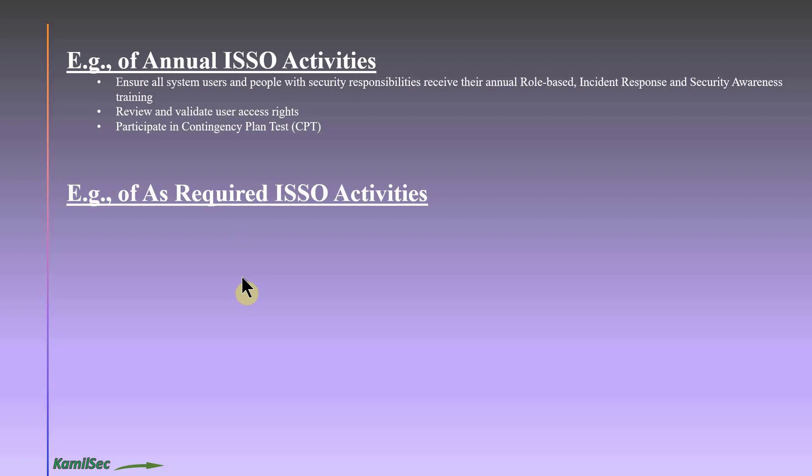For as-required ISSO activities: update the SSP whenever there are system or personnel changes. People move around — someone may leave the project or transition roles — and the SSP must reflect those changes. Similarly, if servers are decommissioned or provisioned, update the SSP accordingly. Attending system admin and engineering meetings is critical for capturing this kind of information.